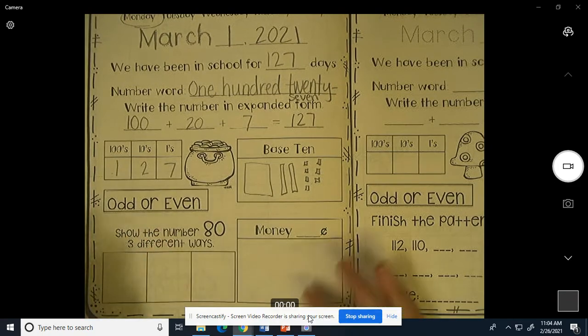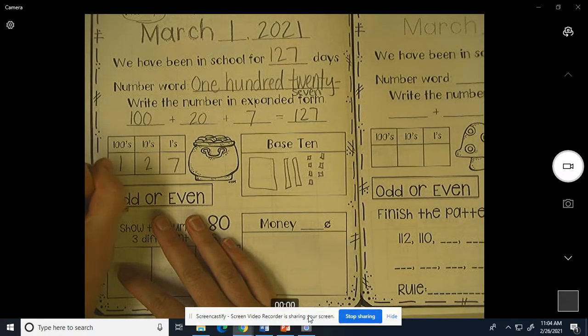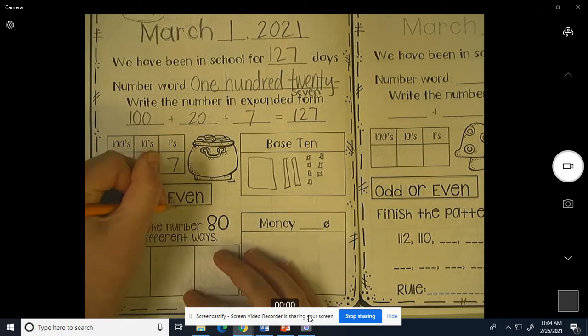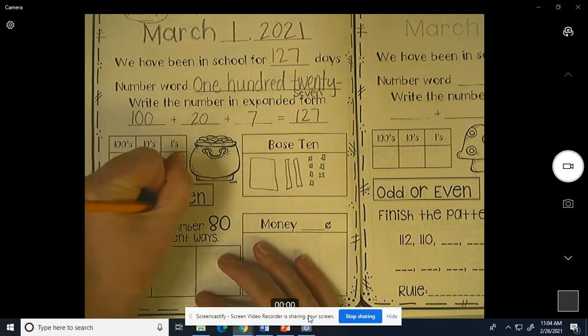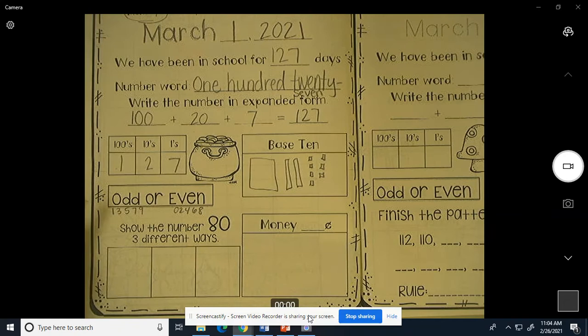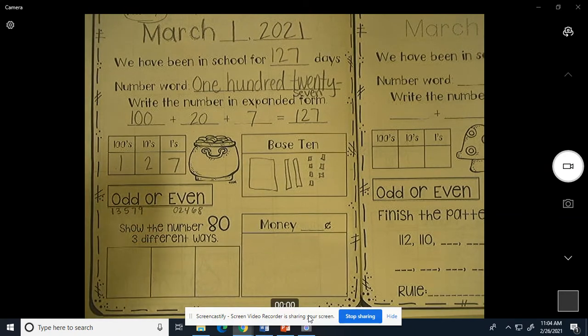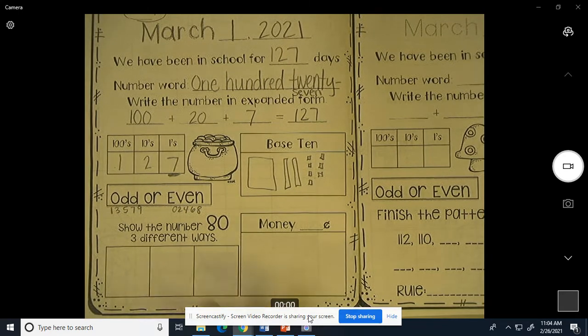Odd or even? Remember, odds are 1, 3, 5, 7, and 9. Evens are 0, 2, 4, 6, 8. Odd or even? Well, our number ends in a 7. Which side is 7 on? Odd. It is an odd number.